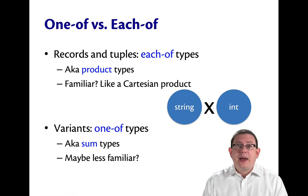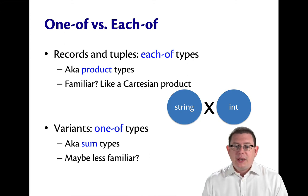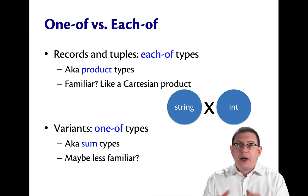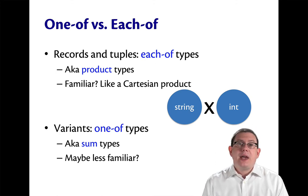What I mean by that is that records and tuples are examples of each of types, in that every value of a record or a tuple has each of the values of some other components. For example, a record representing students has each of a name and an ID number.